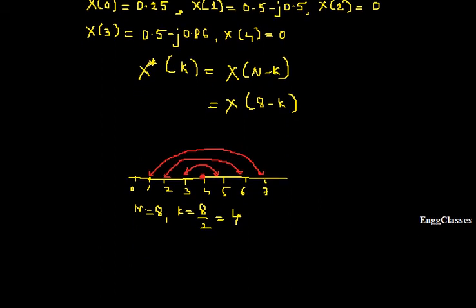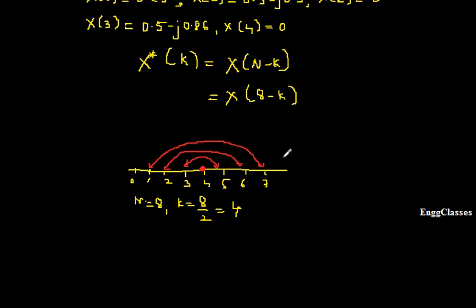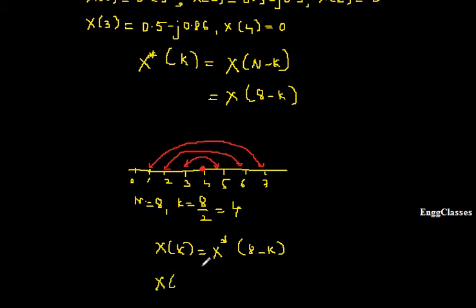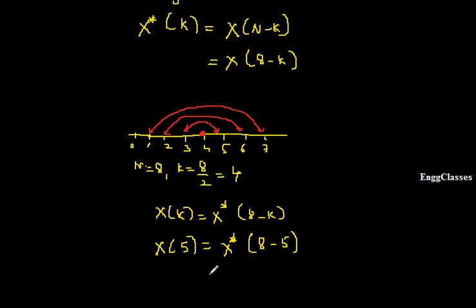To proceed, the formula is: x(k) = x*(8 minus k), or equivalently x*(k) = x(N minus k). So for x(5): x(5) = x*(8 minus 5) = x*(3). I need to find x(5), which is nothing but x*(3).